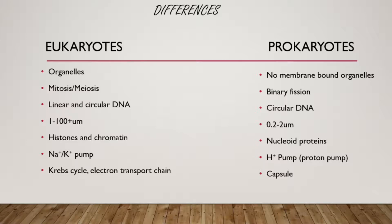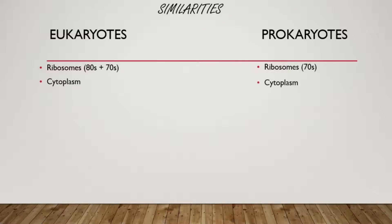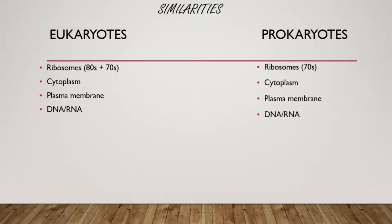Now let's look at similarities between prokaryotes and eukaryotes. Both have ribosomes, but eukaryotes have two types: the 80S found in the cytosol, and the 70S found in mitochondria and chloroplasts. Prokaryotes only have the 70S ribosome. All cells need a cytoplasm and a plasma membrane to separate themselves from the external environment. All living things need DNA and RNA, so that is also shared. Some eukaryotic cells like sperm cells have a flagella, and many prokaryotes do too — a flagella is a whip-like appendage allowing the cell to move. Both also need a cytoskeleton.